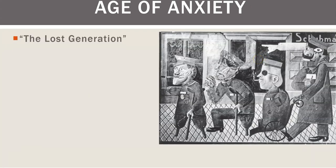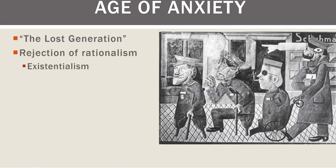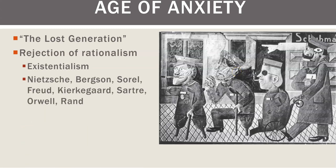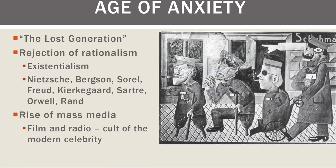The Age of Anxiety, the Lost Generation — if you read All Quiet on the Western Front, you realize what's wrong with the people who joined the Nazis. They're all blown up and messed up. Instead of going off to college and falling in love, they're in brutal hand-to-hand combat with bayonets. There's a rejection of rationalism — the theory was that we're enlightened and the world's getting better, then this massive screw-up happens. Rise of mass media: film and radio, the cult of the modern celebrity. Hitler bought everybody a radio.